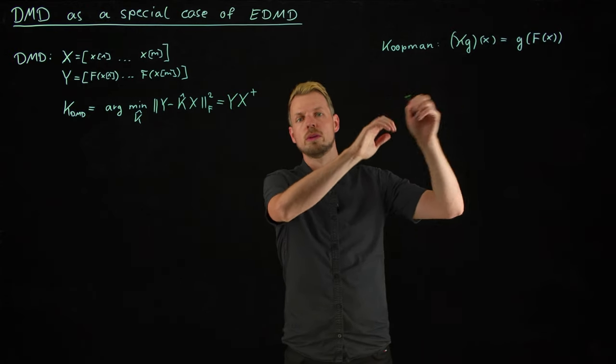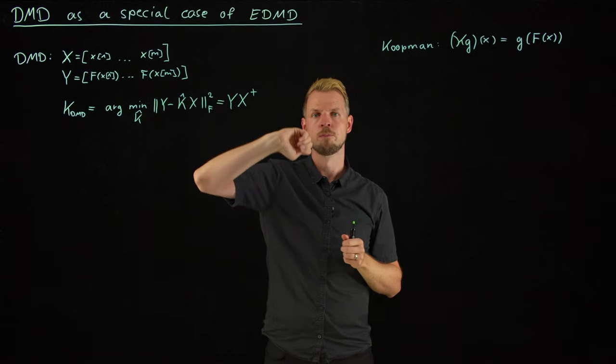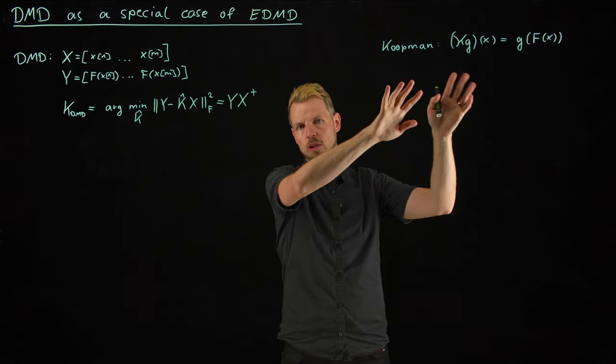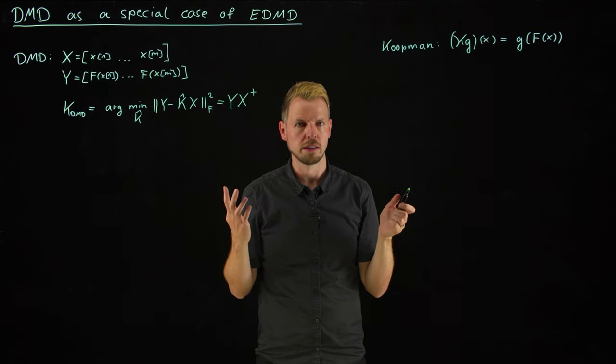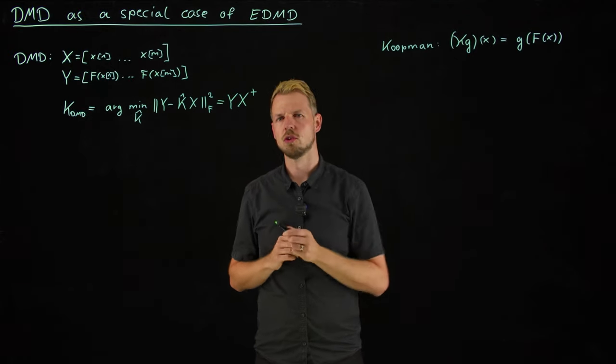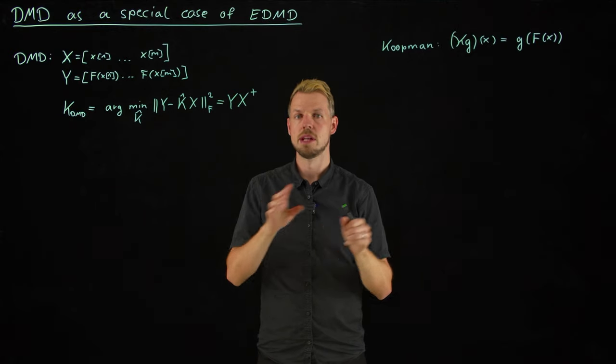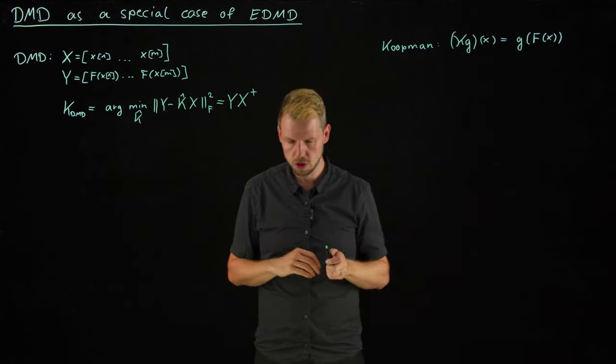Now we have the Koopman operator and we have seen that this extended dynamic mode decomposition, EDMD, is a powerful technique to approximate the Koopman operator. And the question that remains is, are they related? Name wise, obviously they are. And so let's try to formalize this connection and give names from the Koopman world to names in the DMD world.